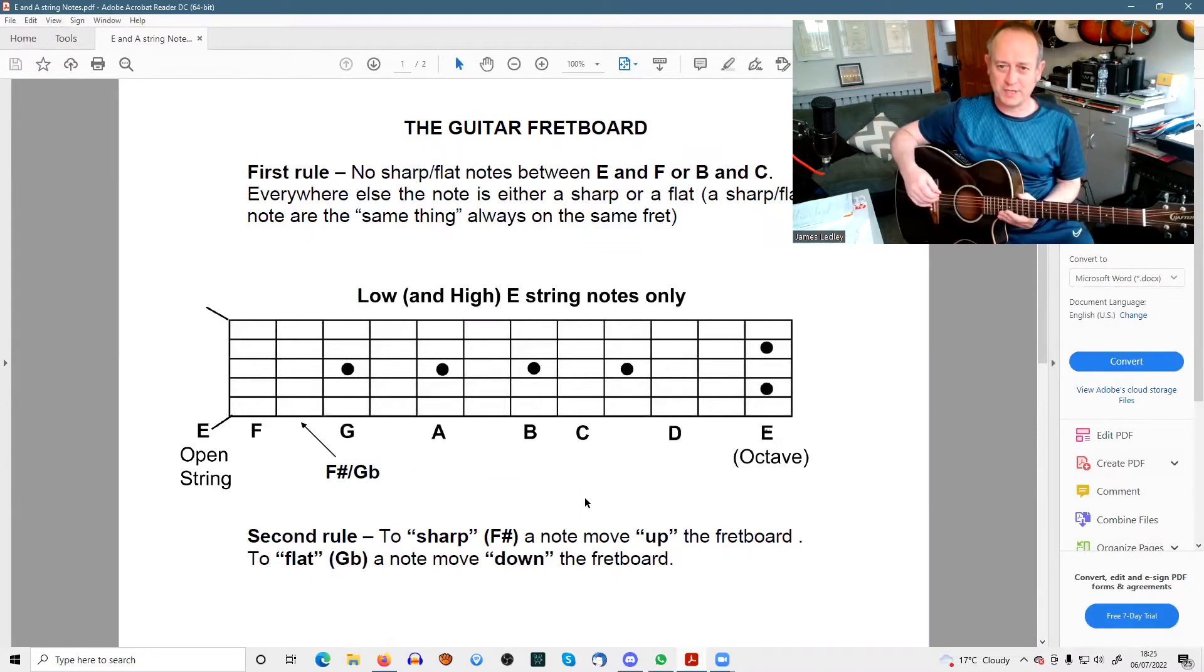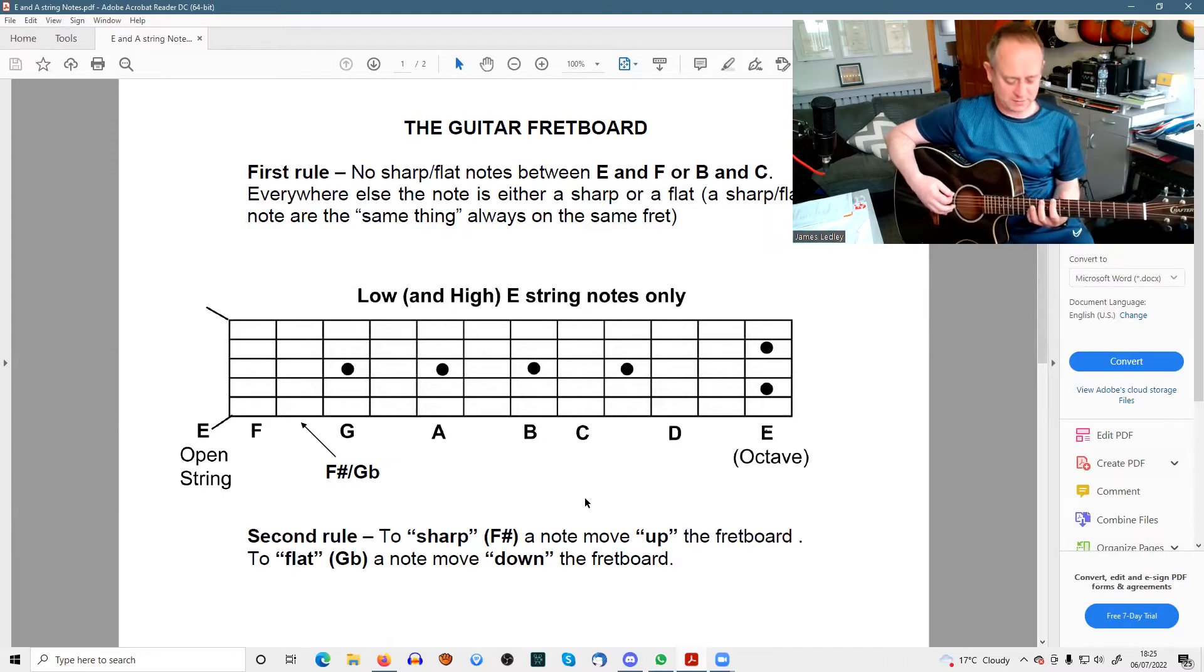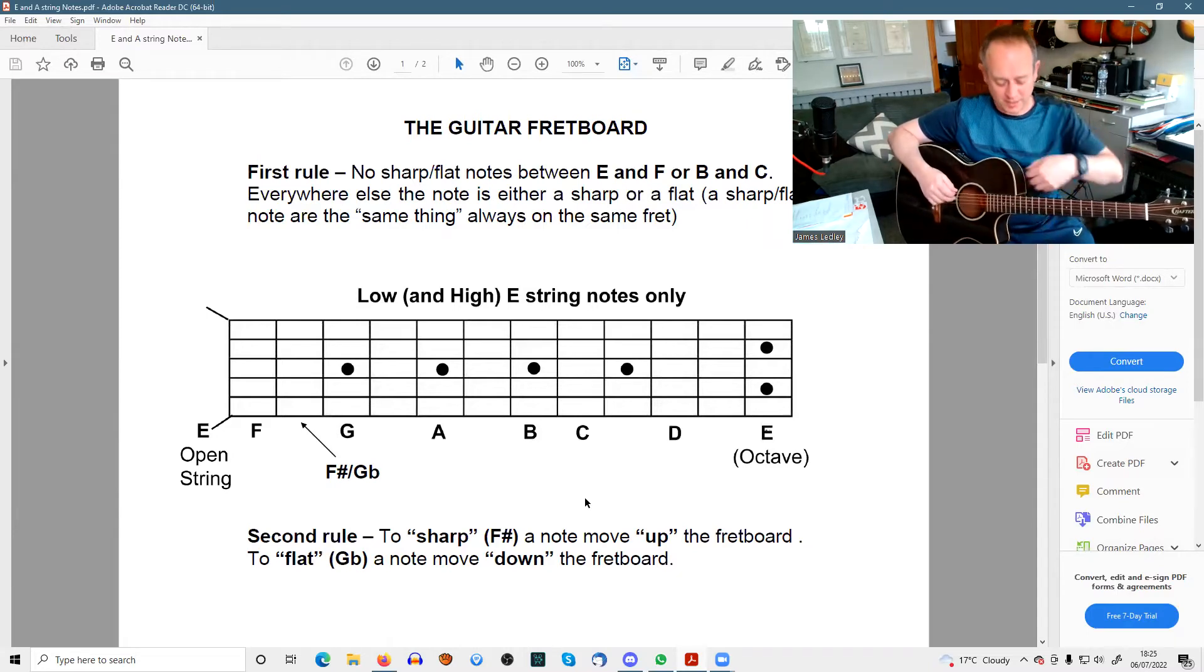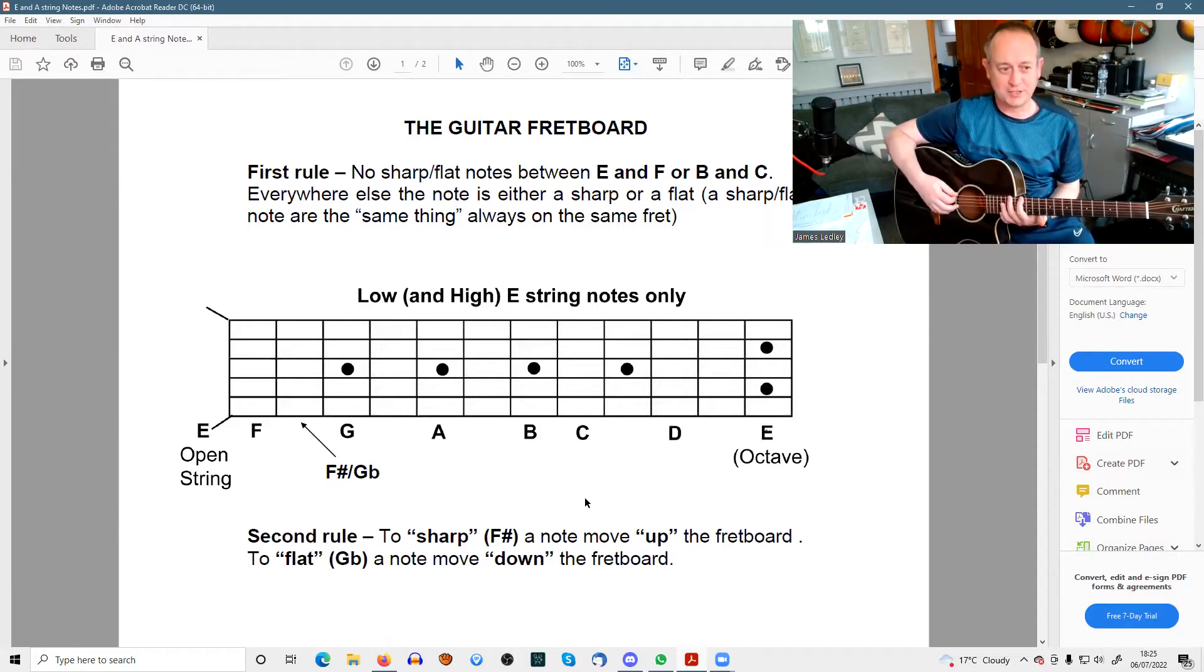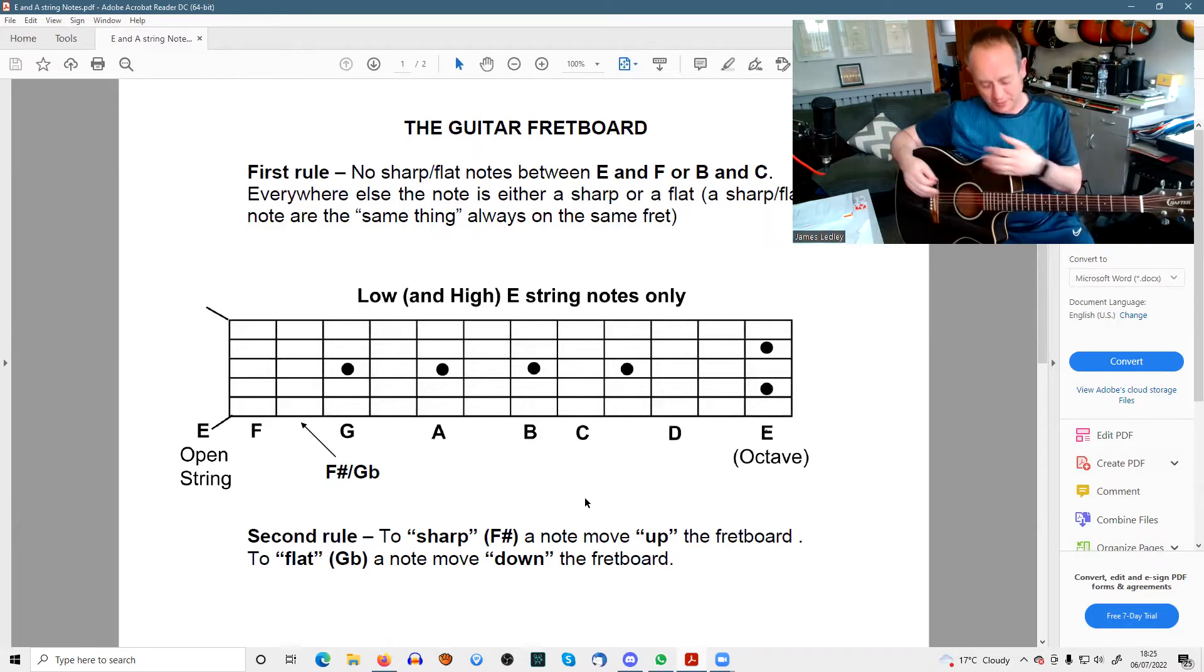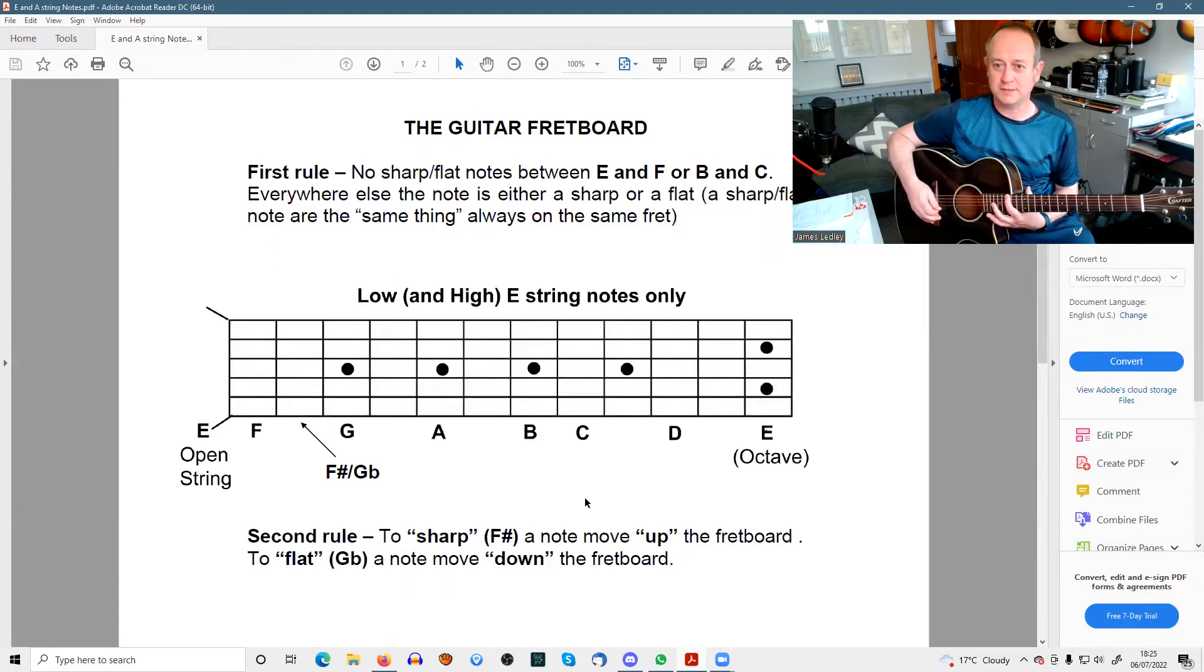So open string E, F on the first fret, G on the third, A on the fifth, B on the seventh, C on the eighth, D on the tenth, E on the twelfth. That's why the two dots are there to mark out the octave. If you go on ahead, it just starts repeating again. You've got basically 12 frets, and then after that, it's the same thing all over.